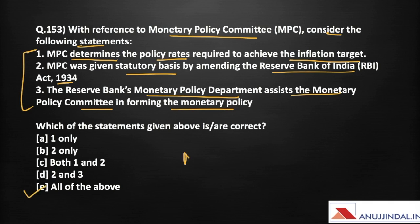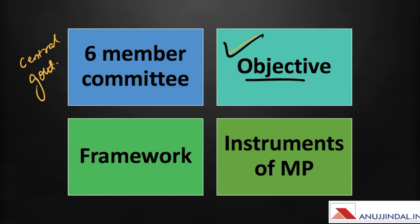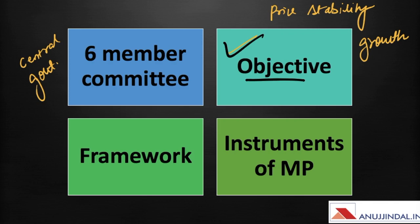MPC is a six-member committee constituted by the central government as per Section 45 ZB of the amended RBI Act 1934. The primary objective of MPC is to maintain price stability while keeping in mind the objective of growth, as price stability is a necessary precondition to sustainable growth. In May 2016, the RBI Act 1934 was amended to provide a statutory basis for the implementation of the flexible inflation targeting framework.